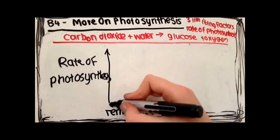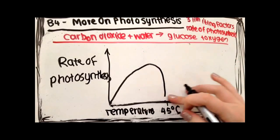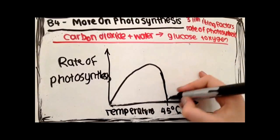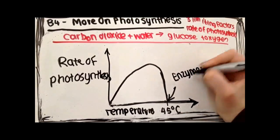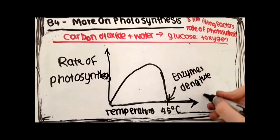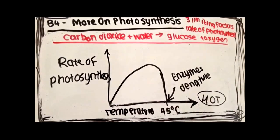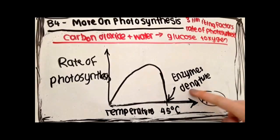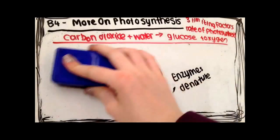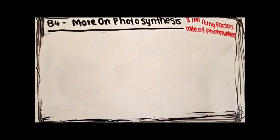Photosynthesis works best when it's warm, but not too hot. As the temperature increases, so does the rate of photosynthesis. But once it reaches 45 degrees Celsius, it is too hot and the plant's enzymes will denature, and so the rate of photosynthesis rapidly decreases.